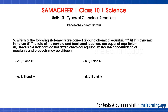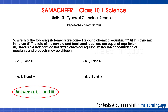Fifth question: Which of the following statements are correct about chemical equilibrium? Statement 1: it is dynamic in nature. Statement 2: the rate of forward and backward reactions are equal at equilibrium. Statement 3: irreversible reactions do not attain chemical equilibrium. Statement 4: the concentration of reactants and products may be different. Statements 1, 2, and 3 are correct. Statement 4 is incorrect because at equilibrium there is no change in concentration, not that concentrations are different. Correct answer is option A: 1, 2, and 3.